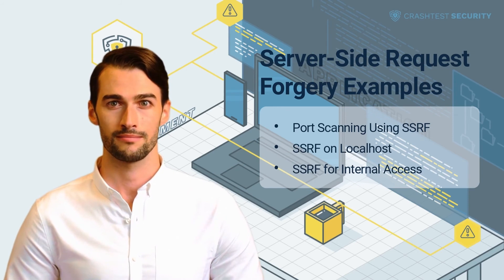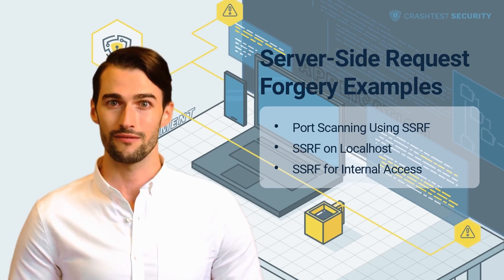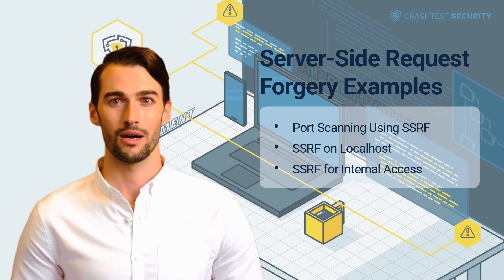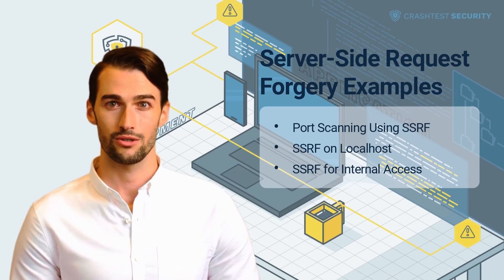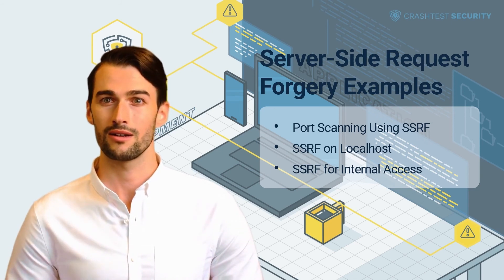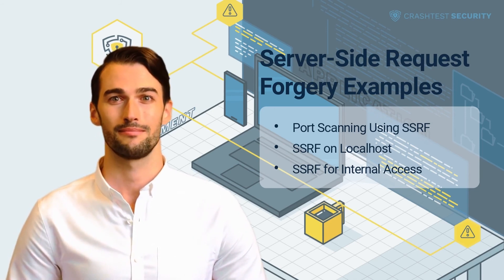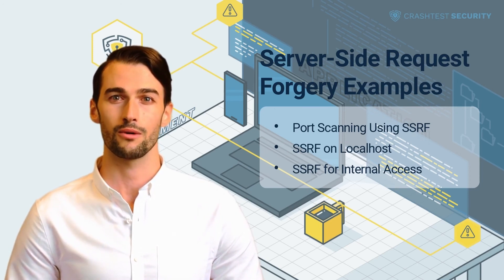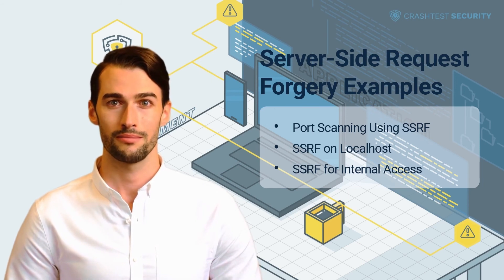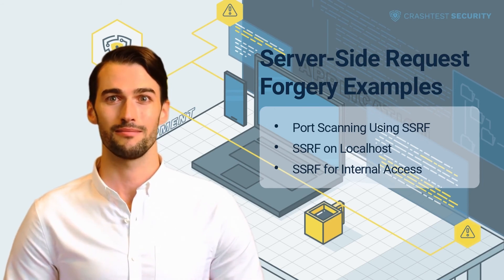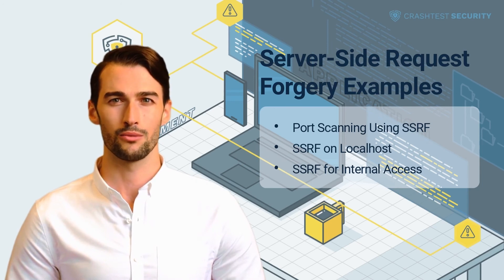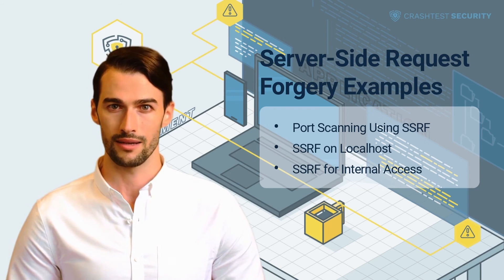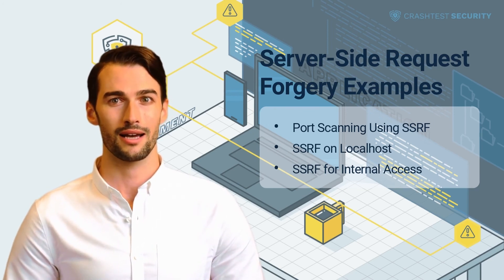SSRF on localhost. Assuming the server sends the following request to obtain product details: https://darwinmarket.com/products?url=https://productspecs.com/specs?id=24. The attacker can manipulate the request to obtain directory and folder information of the vulnerable server: https://darwinmarket.com/products?url=file:///etc/passwd. If the server executes this request, the contents of the /etc/passwd file are displayed, allowing unintended account access.